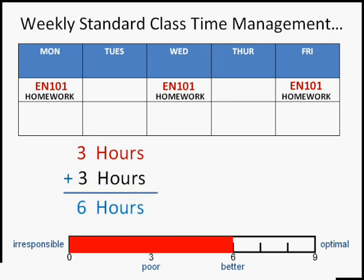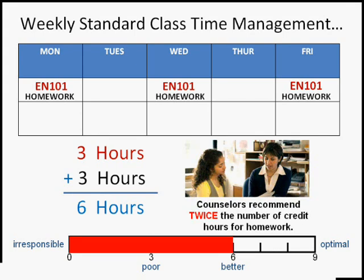Any counselor is going to tell you that, especially if you're not very good at a subject, you need to spend twice the number of credit hours on homework on average if you're going to succeed in that class. So really for a three-credit class you should be spending an additional six hours in homework. That means for English 101 you should be spending a total — including class time, homework, and maybe time in the Writing Center — nine hours is the optimal amount of time to succeed in that class.